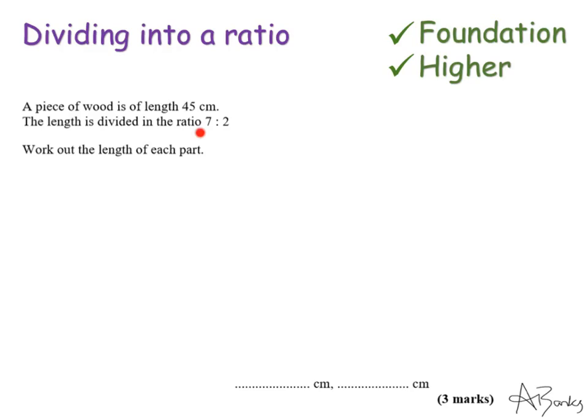So is 14 and 4. We could write out our multiples of 7 and multiples of 2 until we have our answer, and they have to add to make 45 in total. But there is a quicker way of doing this.